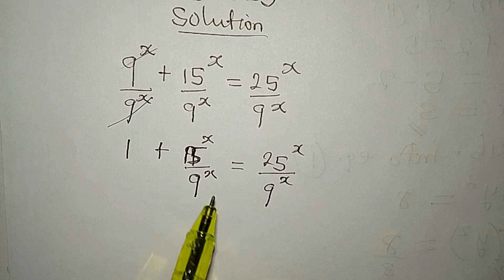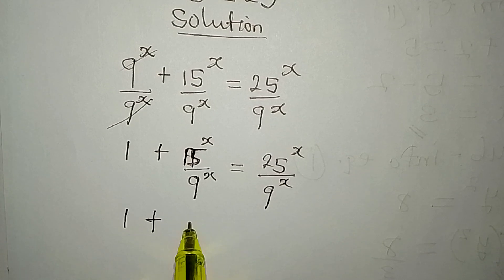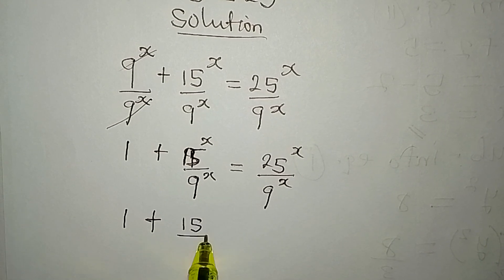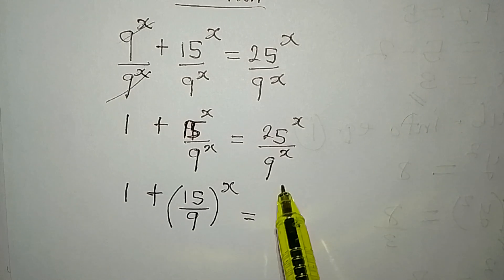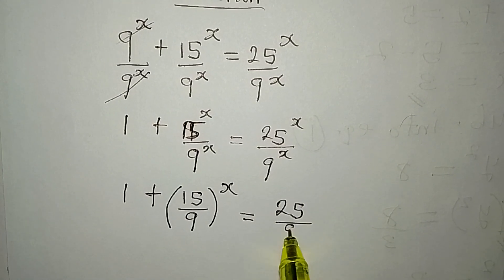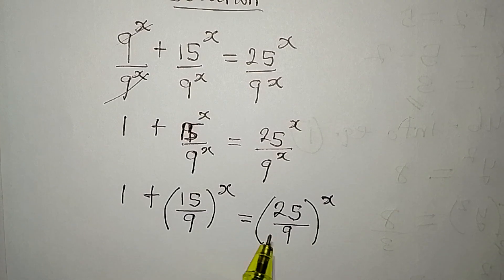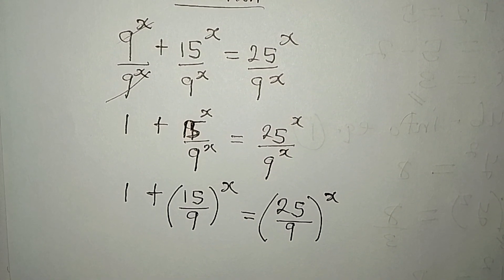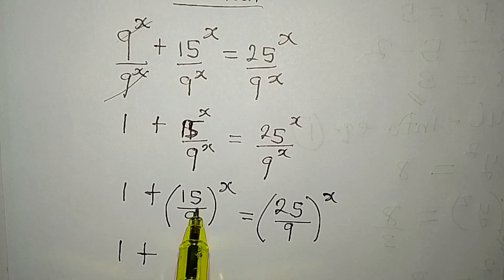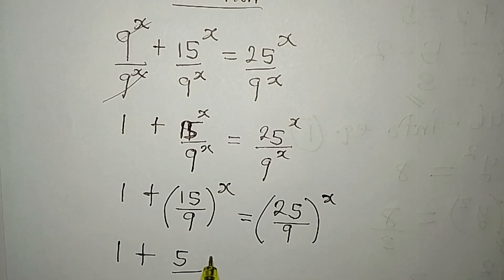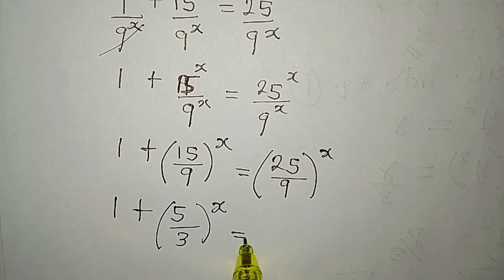Since these two are having power of x, I can combine them. So I have 1 plus 15 over 9 both raised to the power of x, equal to 25 over 9 to the power of x. Remember before we were having 3x, now we have 2. I can reduce this to a lower term, so 15 over 9: 3 can go into 15 giving 5, and 3 can go into 9 giving 3. So we have 1 plus 5 over 3 raised to the power of x.